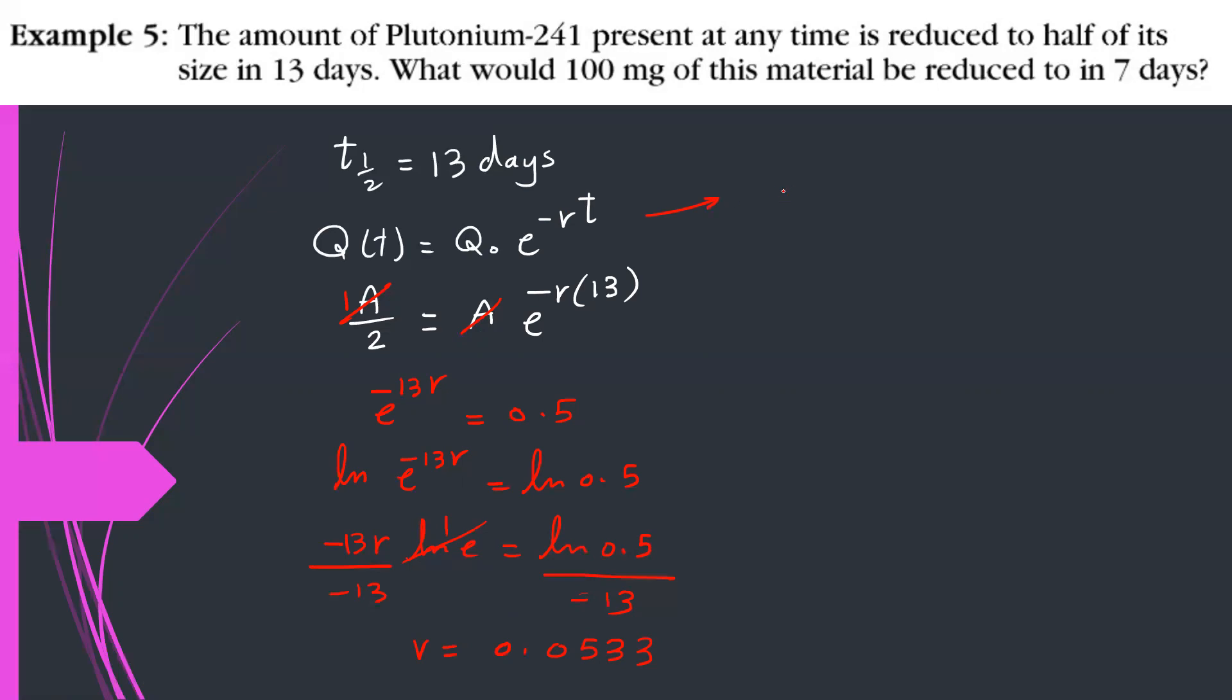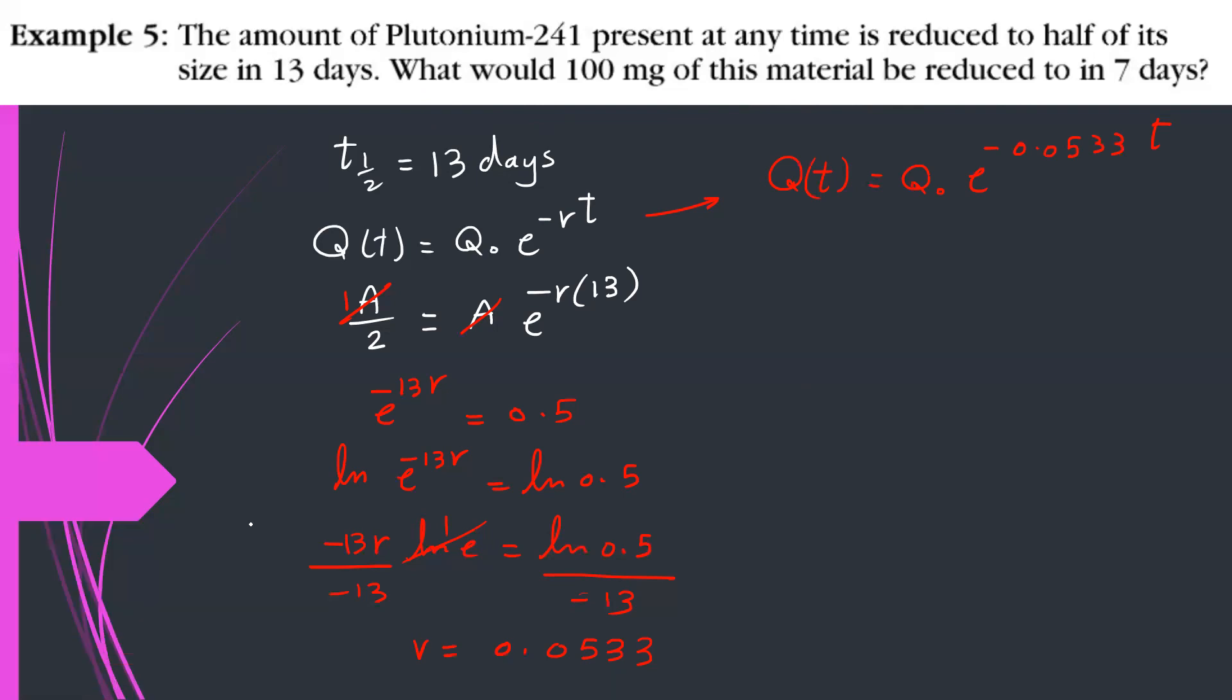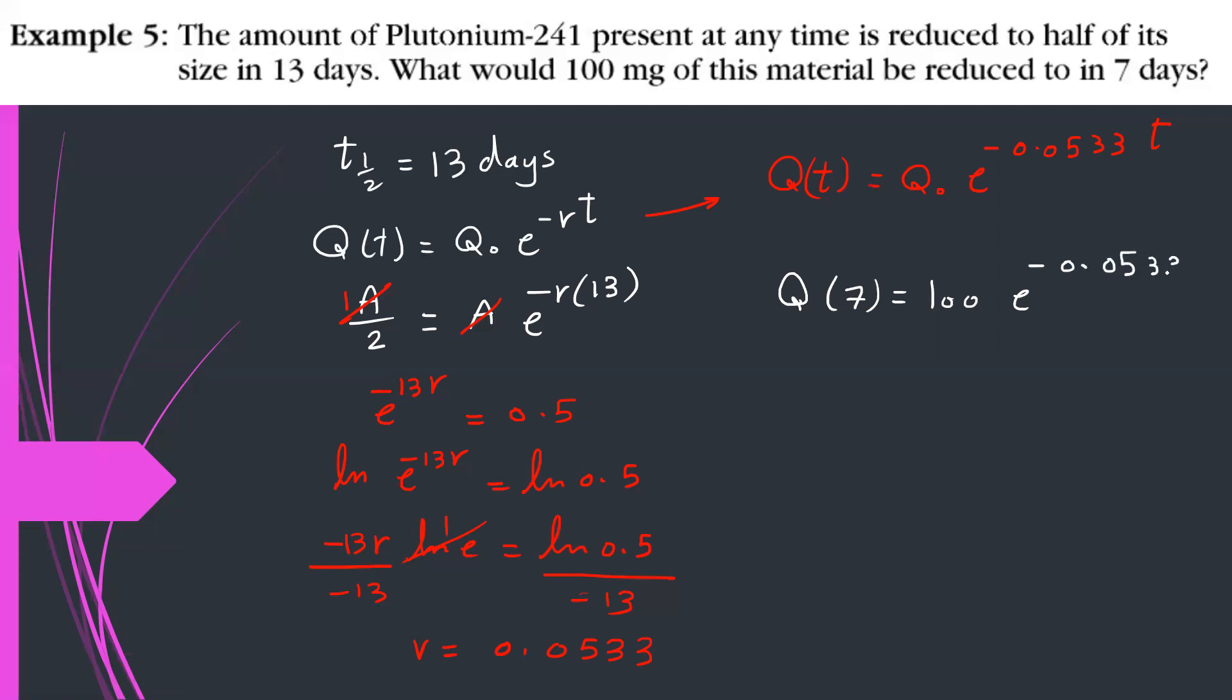Now I have the relation completely. Q(t) now is equal to any initial amount Q naught, times e to the negative 0.0533 times any time t. So what would 100 mg of this material be reduced to in 7 days? The remaining amount after 7 days is equal to the initial amount is 100 mg, e to the negative 0.0533 times 7 days. By solving this expression by calculator, you will get about 68.859 mg, which I can round to 69 mg.